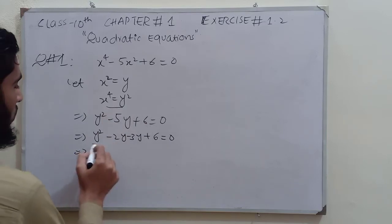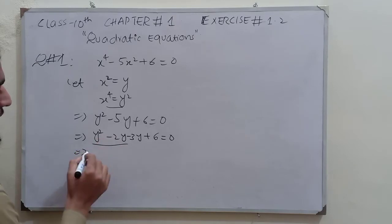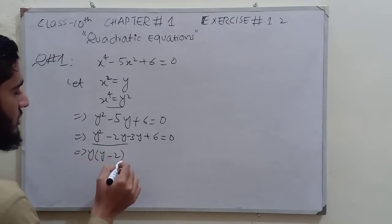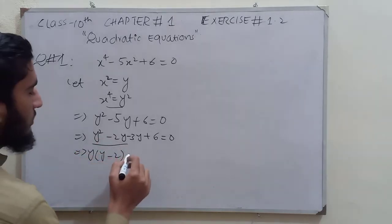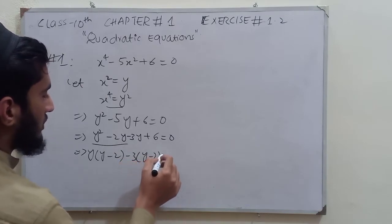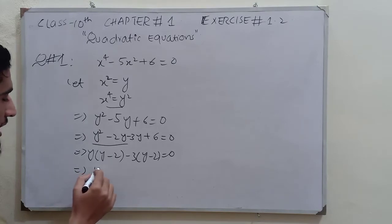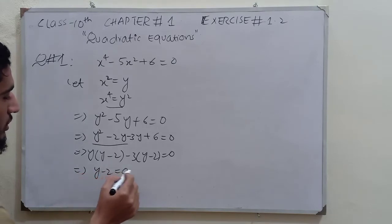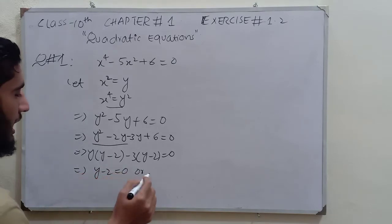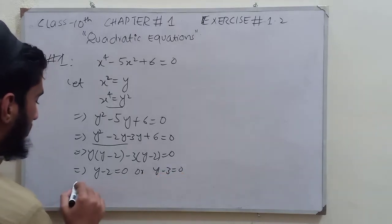Now we take y common from y² minus 2y, leaving y minus 2 inside. Then we take minus 3 common from the remaining terms, also leaving y minus 2. So we have (y minus 2)(y minus 3) equals 0. By the zero factor property we get either y minus 2 equals 0 or y minus 3 equals 0.